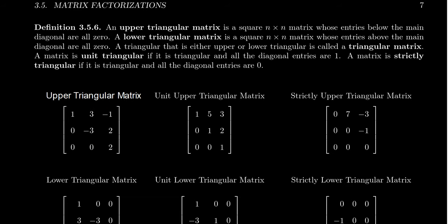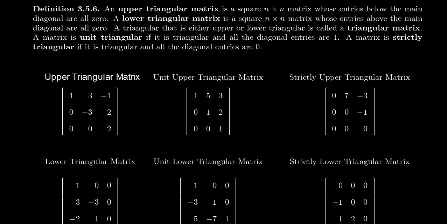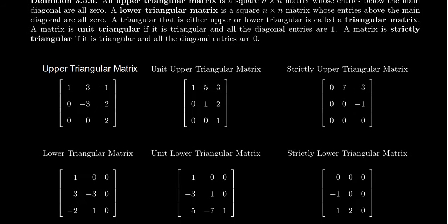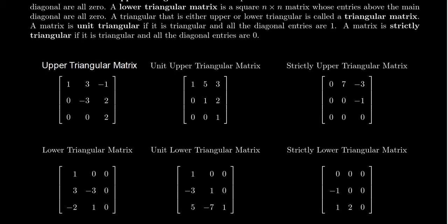In the similar direction, a lower triangular matrix is going to be a square matrix so that everything above the diagonal is going to be zero. The things above the diagonal have to be zero, but the things below it could be whatever they want. If you look for the non-zero numbers, this forms the lower triangular region. This is why we call them upper triangular and lower triangular.